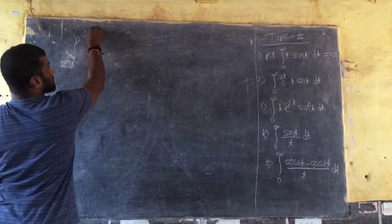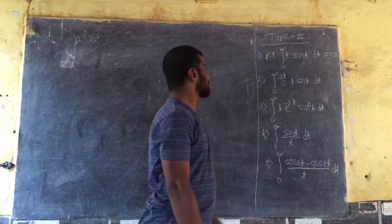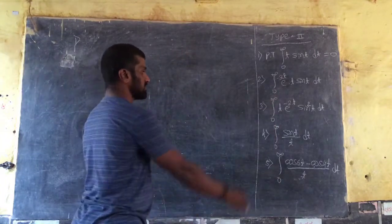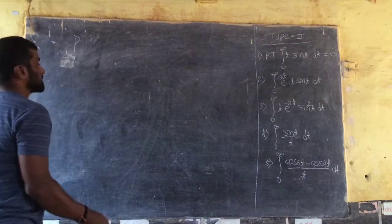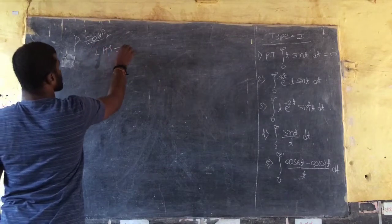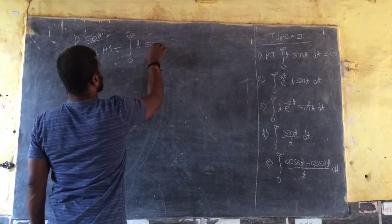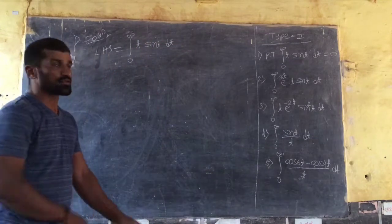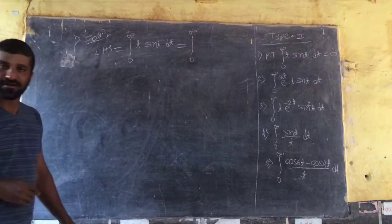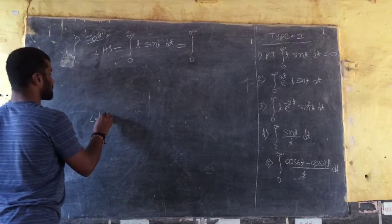Now different examples. First: prove that the integral from 0 to infinity of t·sin(t) dt equals 0. Second: integral from 0 to infinity of e^(3t)·t·sin(t) dt. I'll solve the first example. The LHS is the integral from 0 to infinity of t·sin(t), which is exactly in the form of the definition of Laplace.